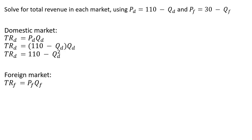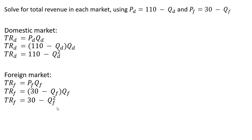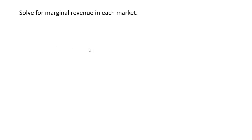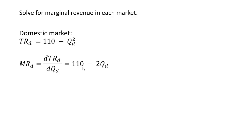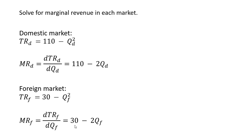For the foreign market, total revenue is the price in the foreign market times the quantity in the foreign market. Making a substitution for the price term and simplifying, we get total revenue. Taking the derivative to get marginal revenue: in the domestic market, marginal revenue is 110 minus 2Q — like the inverse demand but with a slope twice as steep. In the foreign market, we similarly get marginal revenue from total revenue of 30Q minus Q squared.